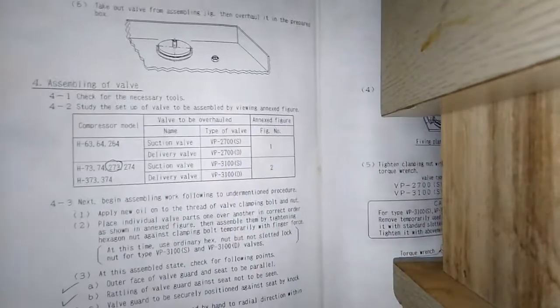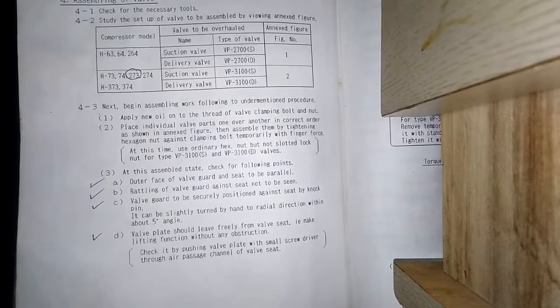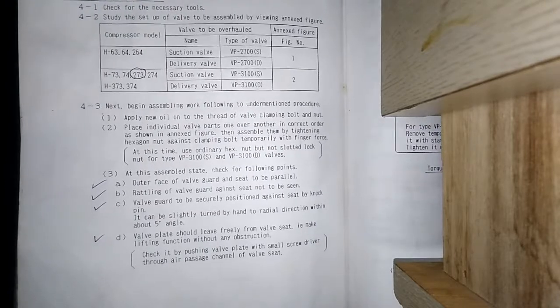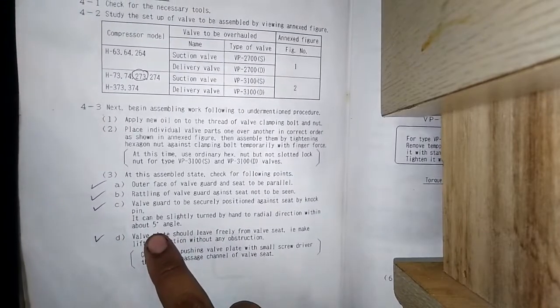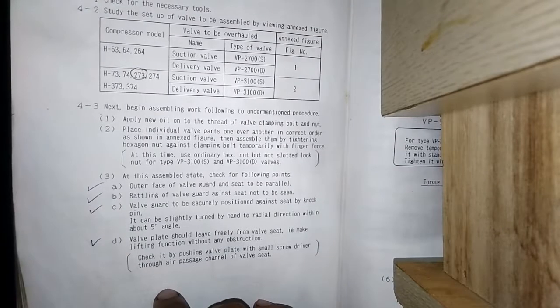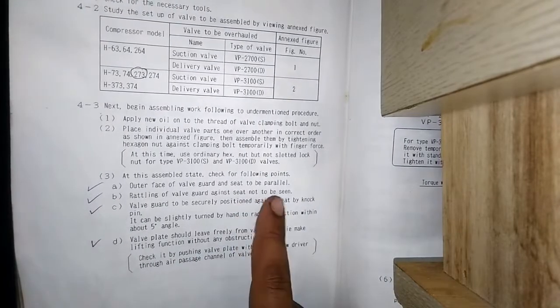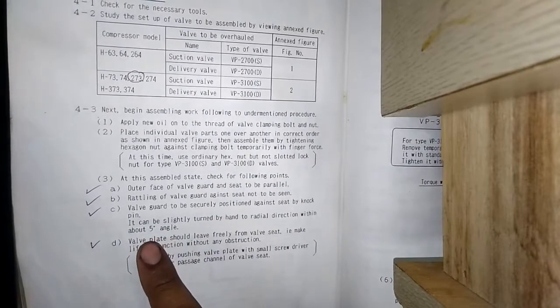How to assemble and clean it. What are the things you have to check while cleaning and assembling. Five degrees turn, I will show you. The outer face of the wall guard and seat must be parallel.